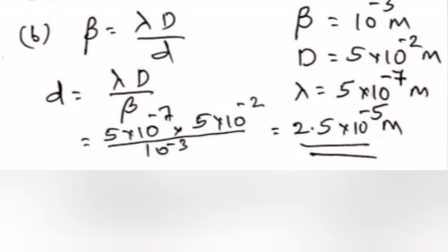β equals 10⁻³ meter, D equals 5×10⁻² meter, λ equals 5×10⁻⁷ meter. Small d equals λD by β equals 5×10⁻⁷ into 5×10⁻² by 10⁻³ equals 2.5×10⁻⁵ meter.